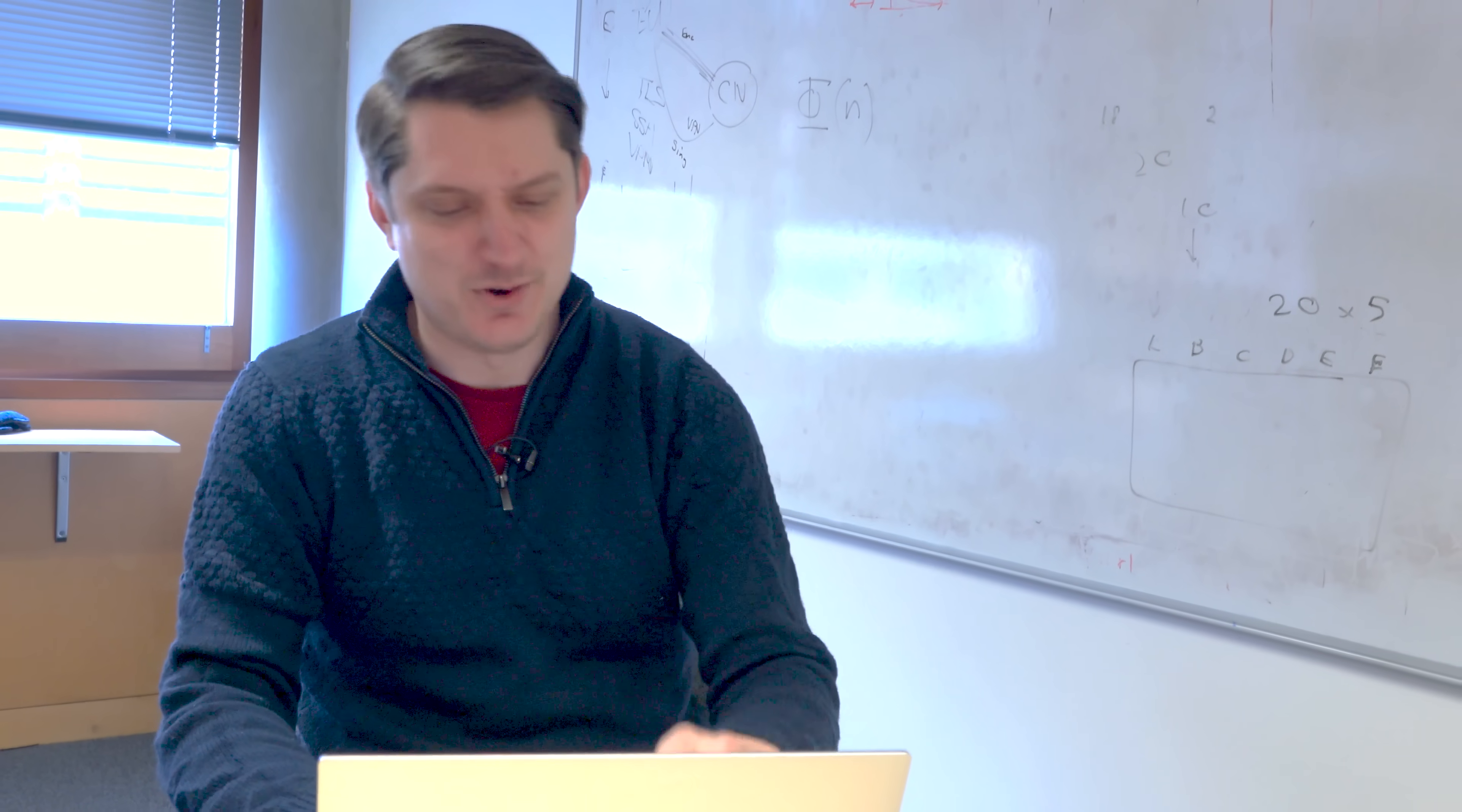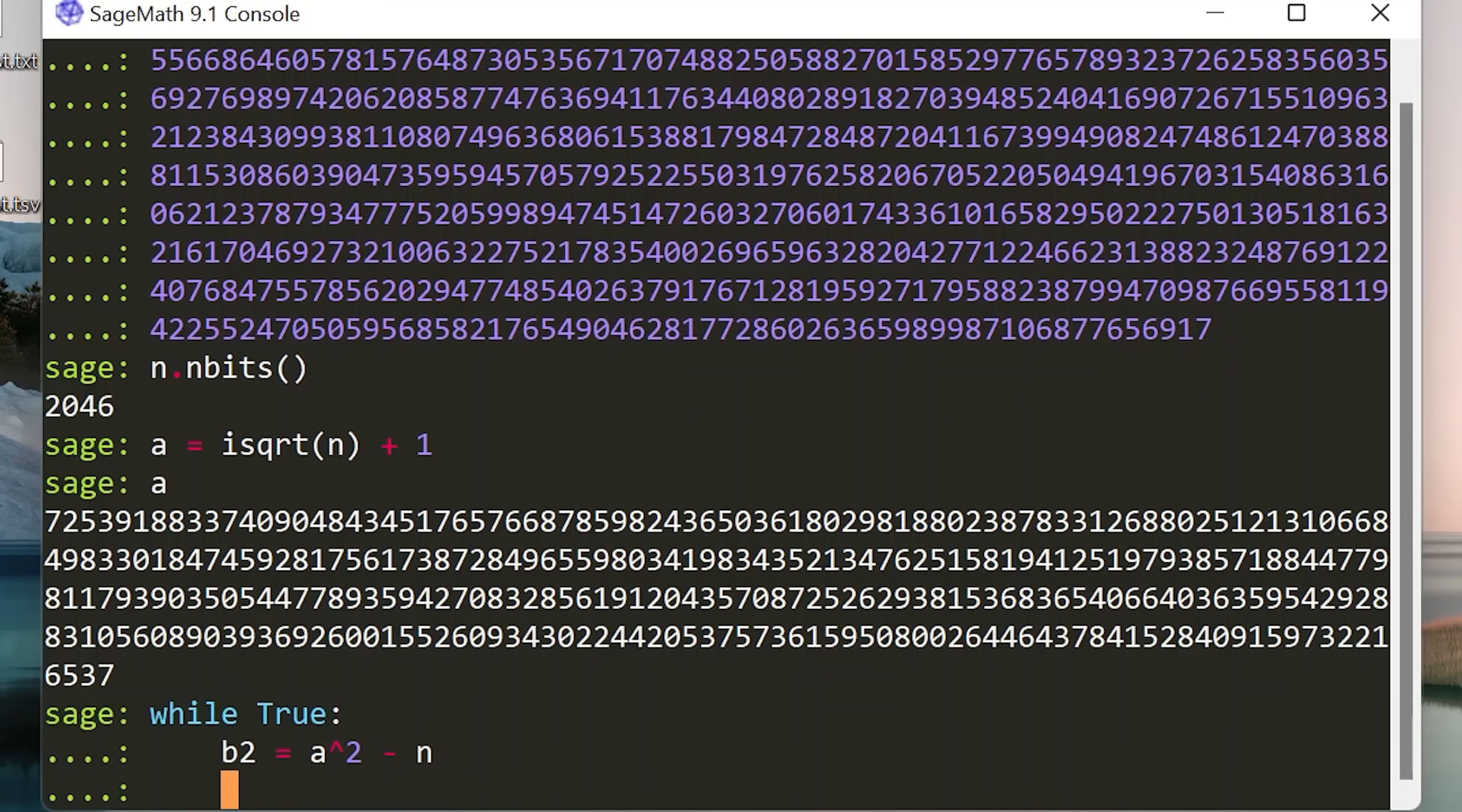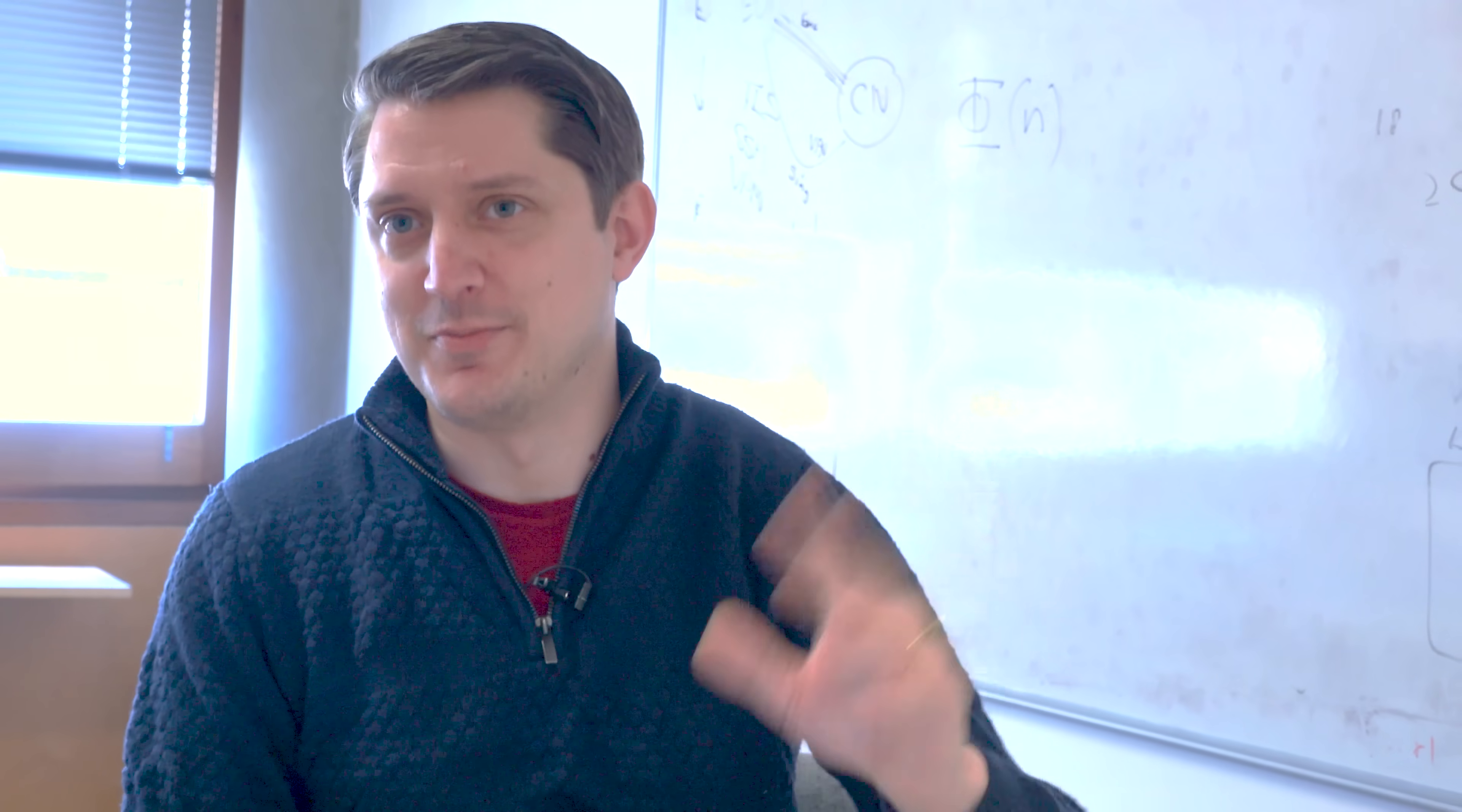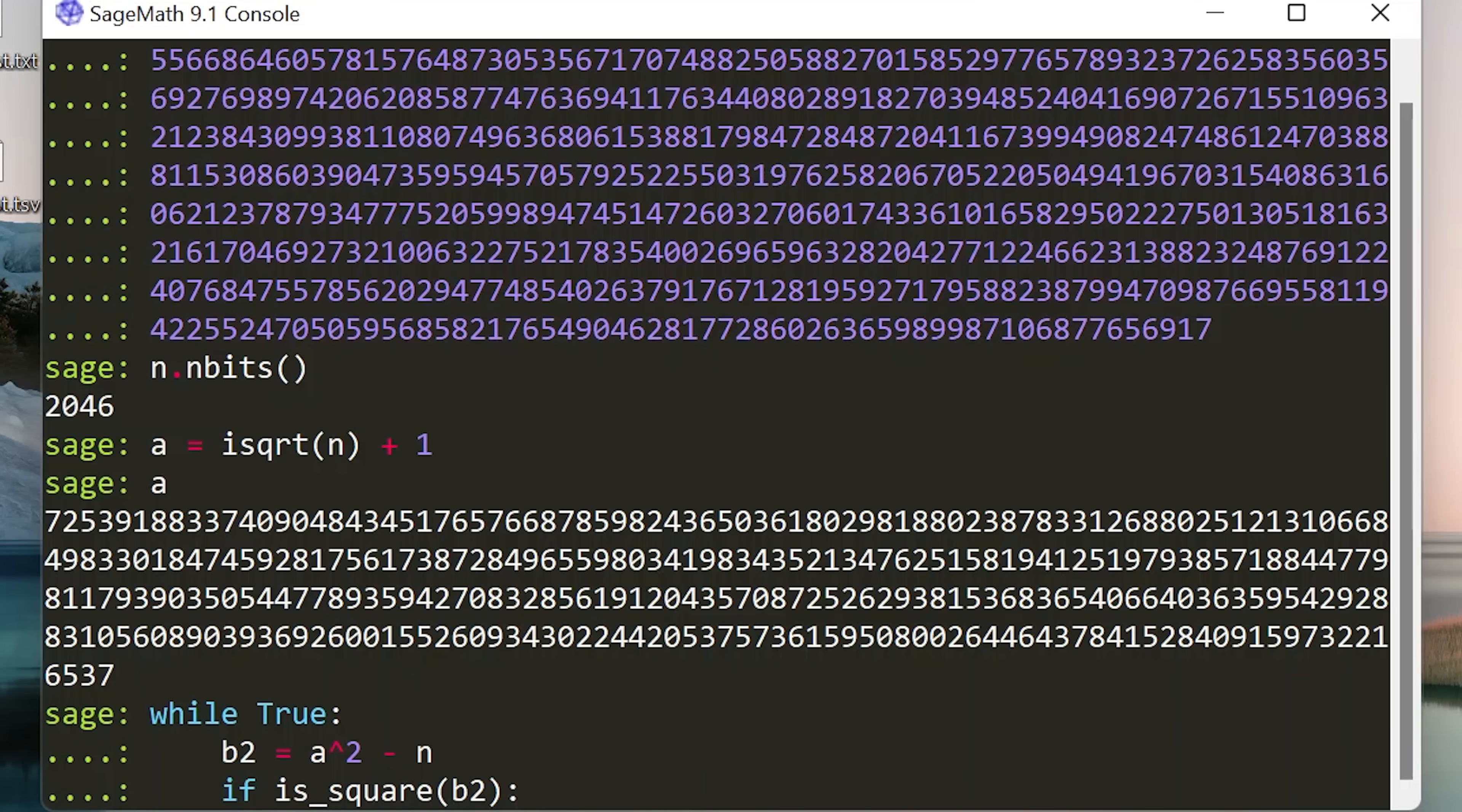While true, don't use while true most of the time, I'm cheating. While true, let's calculate B squared is equal to A to the power of 2 minus N. All right, hopefully this will work. And then if is square... As an aside, the thing I like about SageMaths is they've already implemented things like is square, so I don't have to bother implementing it myself. Sounds like a lot of work. I don't like doing a lot of work for my attacks. So if B2 is a square, we've already solved the algorithm, right?